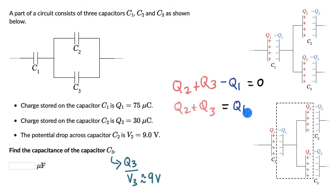We know what Q1 is and we know what Q2 is. Q3 will be equal to Q1, which is 75, minus 30, and this is 45 microcoulombs. If we replace 45 in this relation, this will give us 45 divided by 9, which is 5 microfarads.